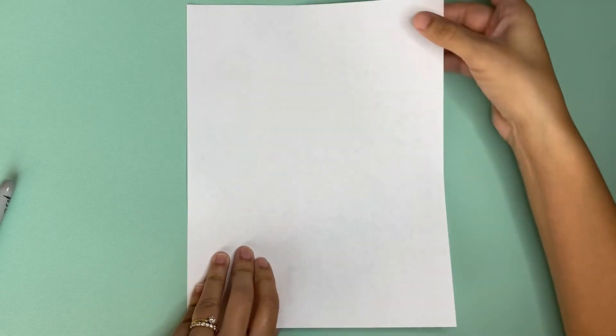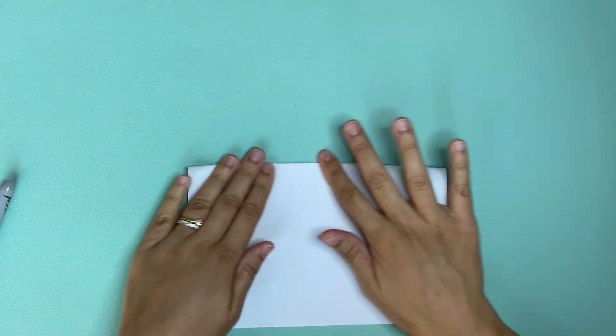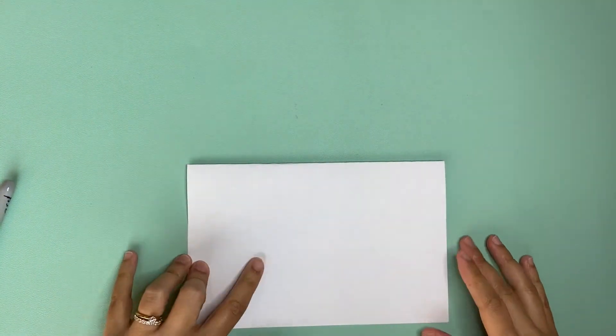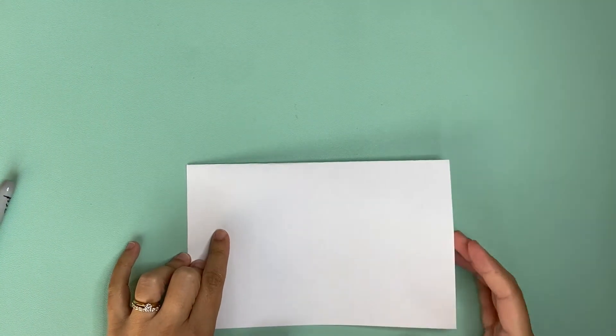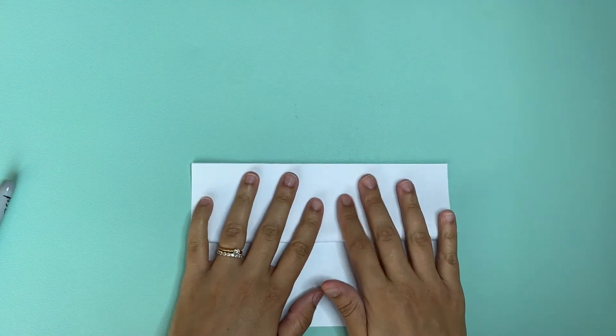So first step you need to do is fold the top of your paper to the bottom like this. Next you take off the first part and you bring it to the top of your paper.